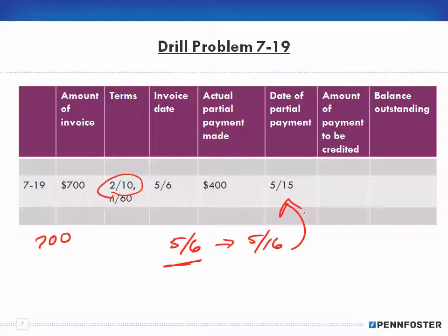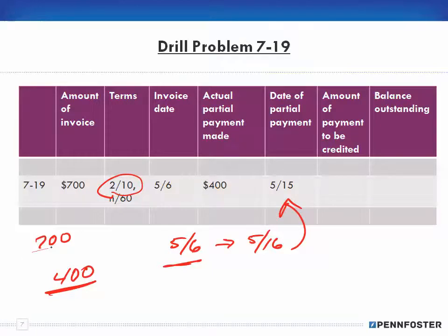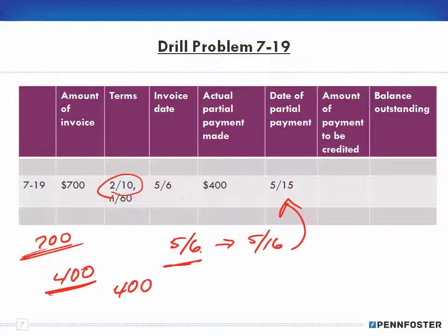Because we're only partially paying $400, we can only take the discount on the amount being paid — not the full invoice amount. So we're paying $400 and getting that additional 2% credit on the $400.